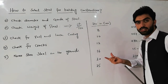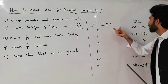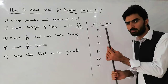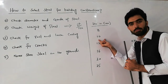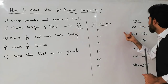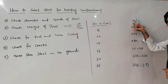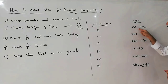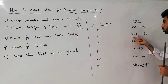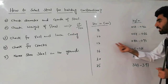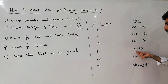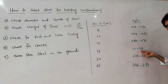For 8 mm diameter steel, the weight should be 0.37 to 0.42 kg per meter. For 10 mm, the weight should be 0.57 to 0.66 kg per meter. For 12 mm, it should be 0.84 to 0.93 kg per meter. For 16 mm, the weight should be 1.5 to 1.66 kg per meter.